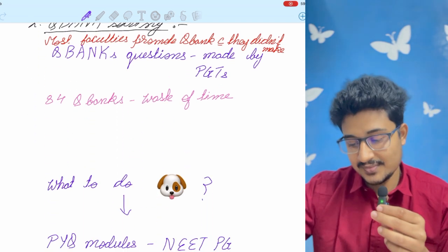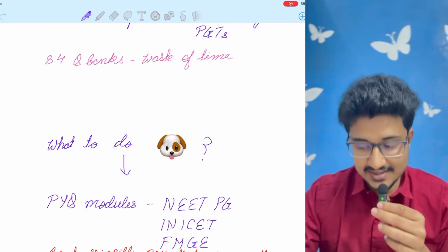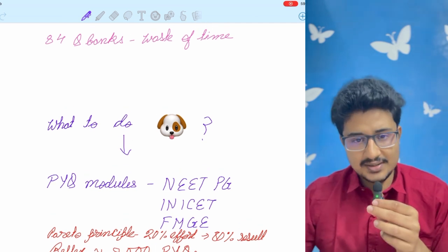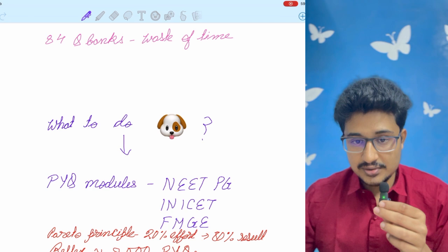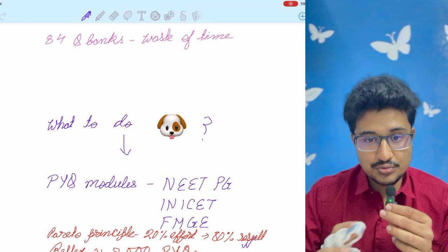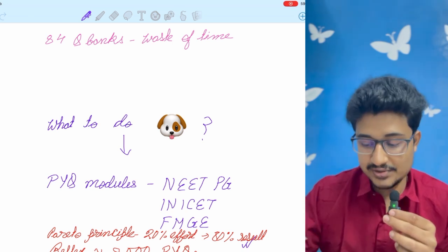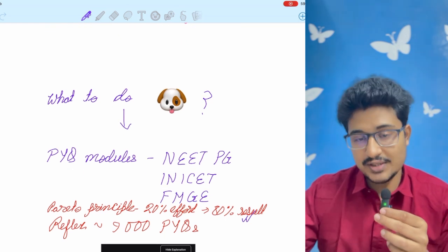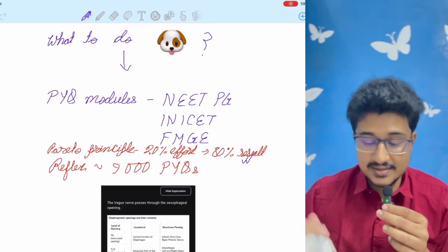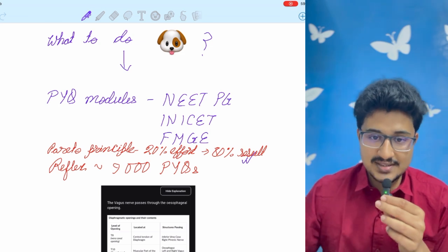So, what you should do? That is solving the PYQ modules of NEET-PG, INICET and FMG. All these three papers, because you know the Pareto principle - it says that if you put 20% of the effort in the right place, you get 80% of the results. This 20% you should put in the previous year question solving, then you would get 80% of the results. From where to solve, you can solve from any app, but only Reflex has the maximum number of questions, that is 9,000 previous year questions. And it is the only app that has the FMG questions also in the same section.